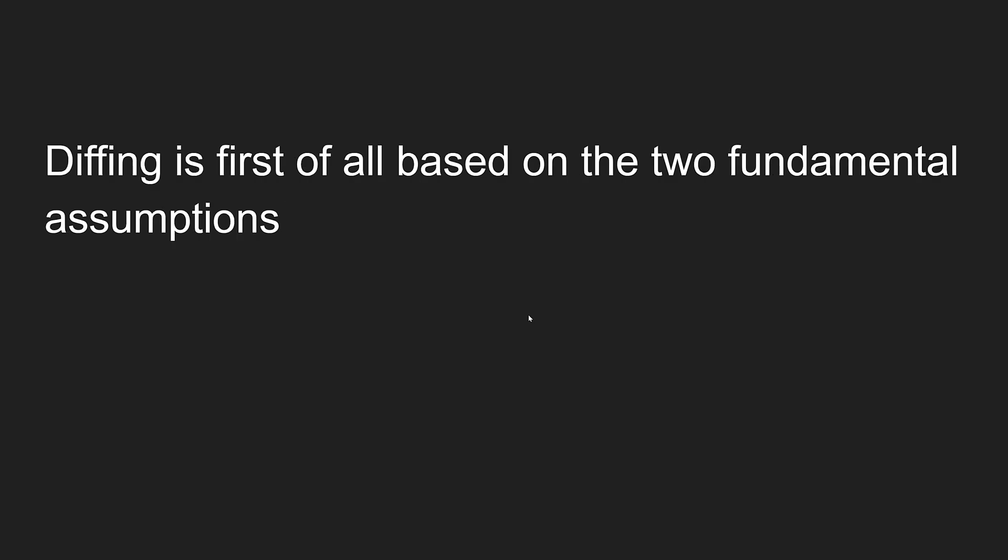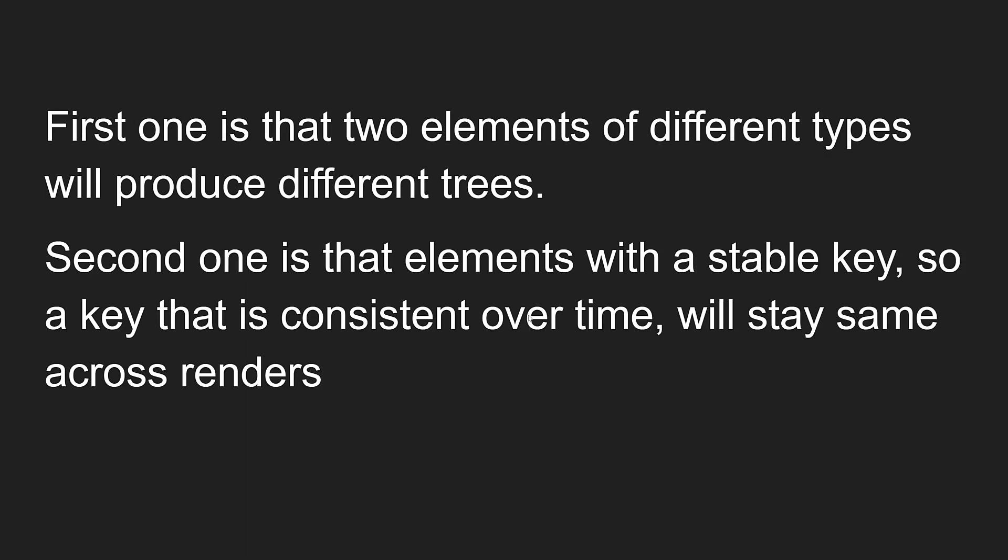Diffing is first of all based on two fundamental assumptions. The first one is that two elements of different types will produce different trees. The second one is that elements with a stable key — a key that is consistent over time — will stay the same across renders.